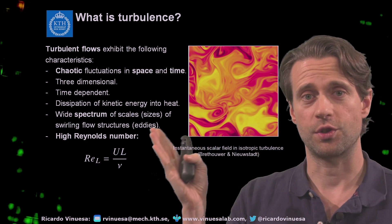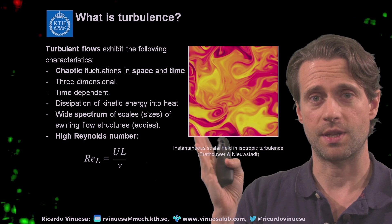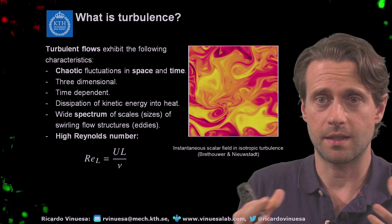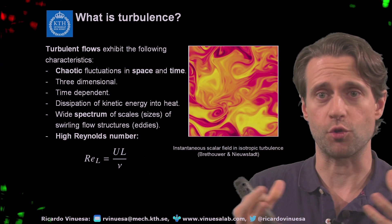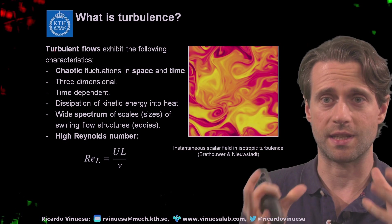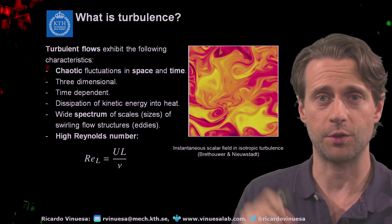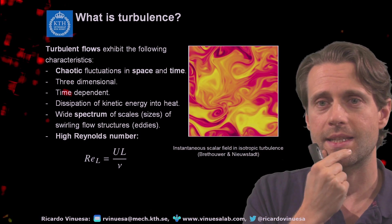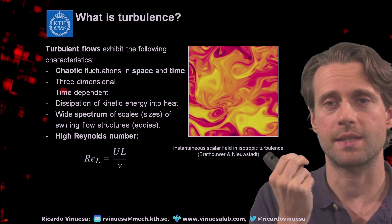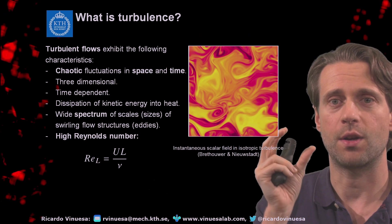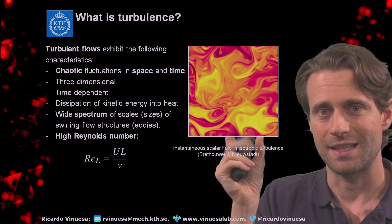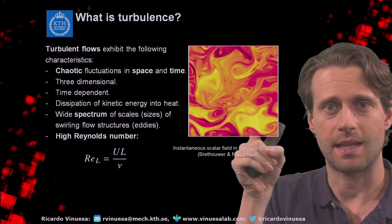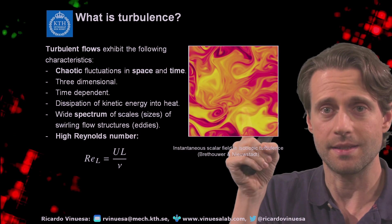I want to show you also this visualization over here. This is showing the characteristic coherent motions, these structures that I've been talking about. And you can actually see something very interesting — turbulence is associated with a number of scales. So these eddies, these vortices, exhibit different sizes.